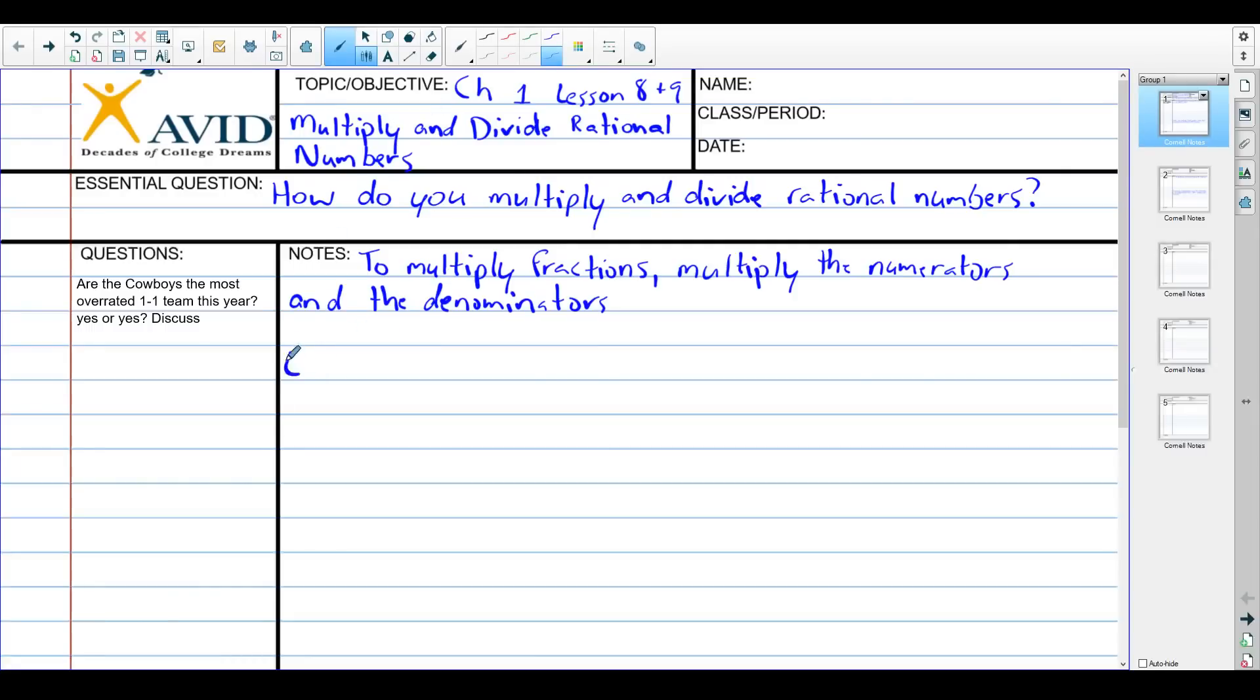Example one: one fourth times three eighths. All we have to do is multiply the numerators and the denominators, so we go straight across. We have one times three on top and four times eight on the bottom. One times three is three, four times eight is thirty two. Can't simplify, so we're done. Piece of cake.